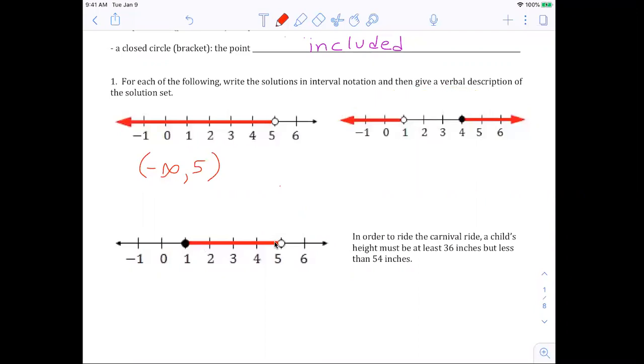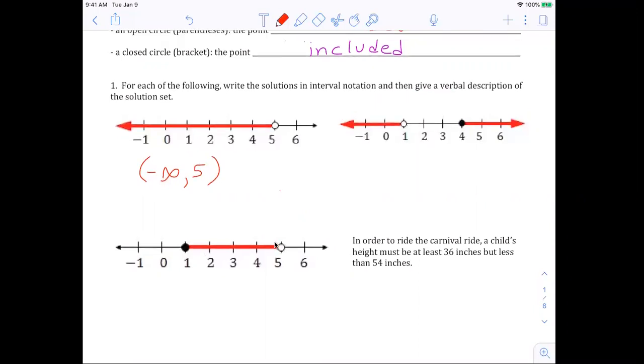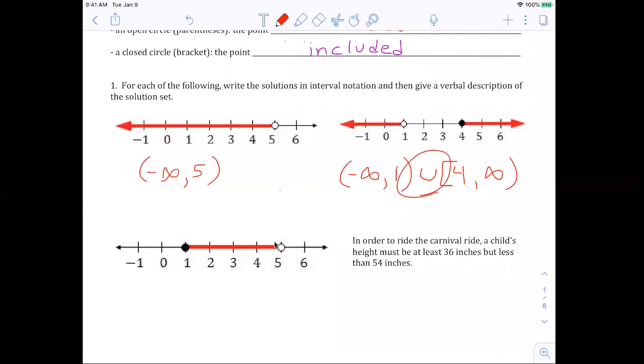Moving across the top to this one on the right, we have two parts to this solution set. So in this case, the left part is everything from negative infinity exclusive to one exclusive. Union, meaning our solution can also be in the next set over here, which is bracket or inclusive of four to infinity exclusive. So we have really two places where our solution set could be in. It could be in this part that goes together or the union is like an or statement, this part. But this is all one solution set.